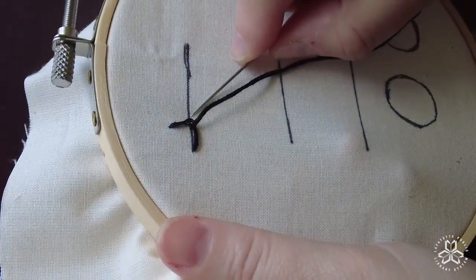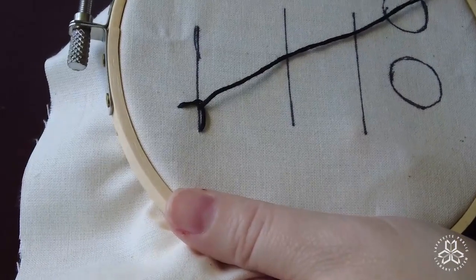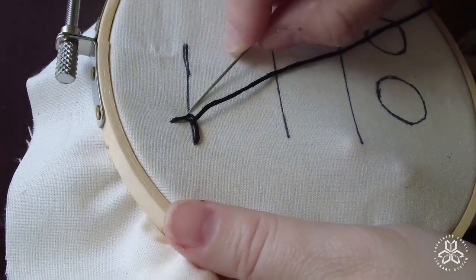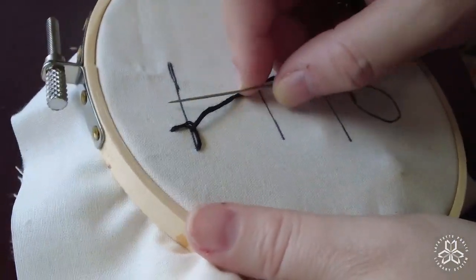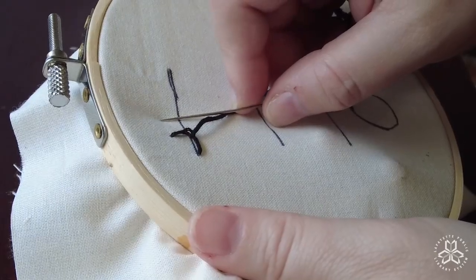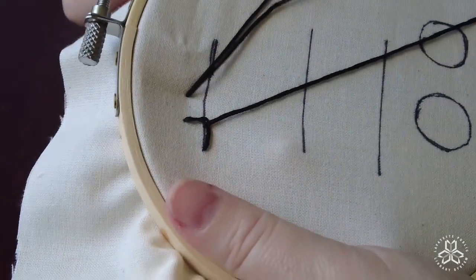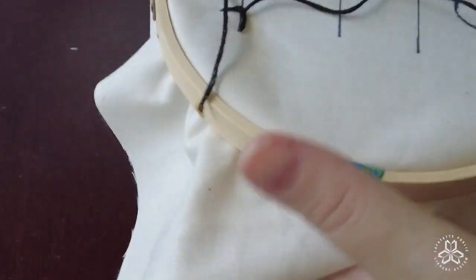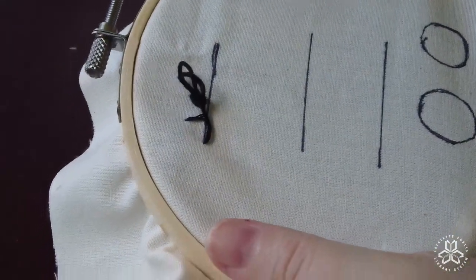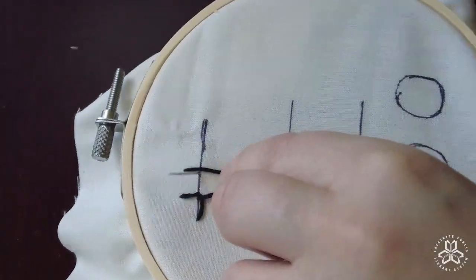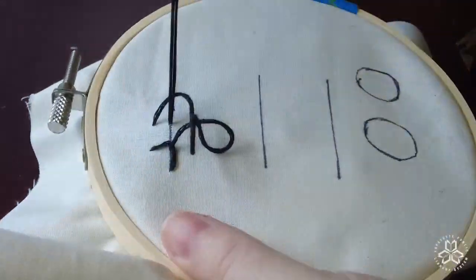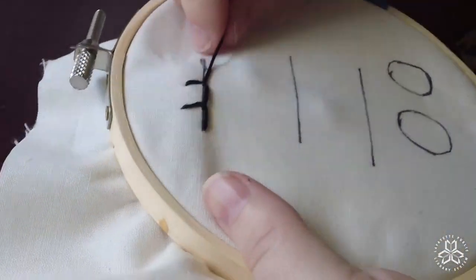And then I'm going to do the same thing. I'm going to count over one stitch length and then I'm going to go up from that, push my needle through, create a little loop and then push up on the point underneath that on the line.